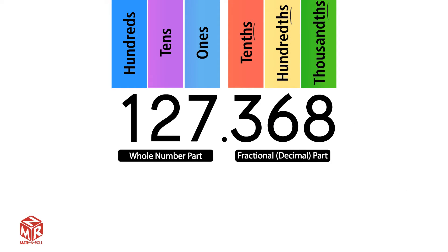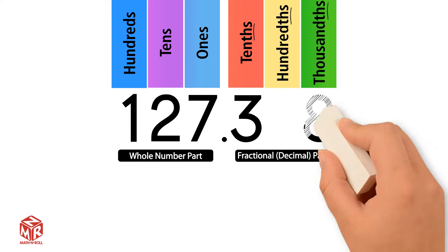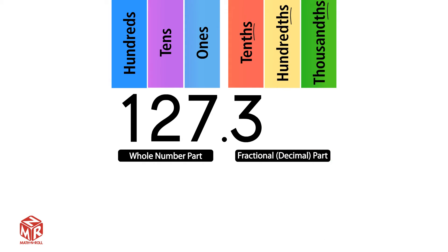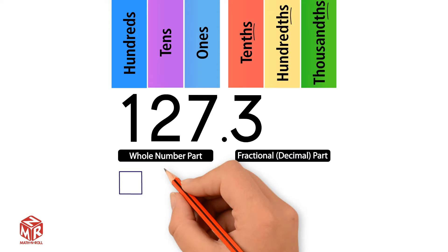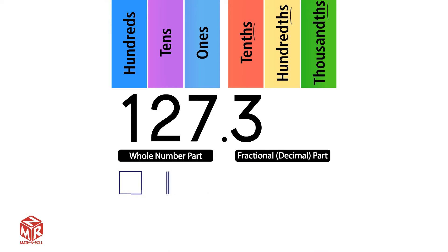To start, let's remove the hundredths and thousandths. We have the number 127.3. Let's draw it out. We have 100, 2 tens, 7 ones, and 3 tenths. 3 tenths is the same as saying 3 out of 10 parts.